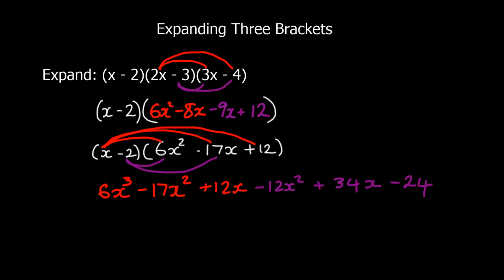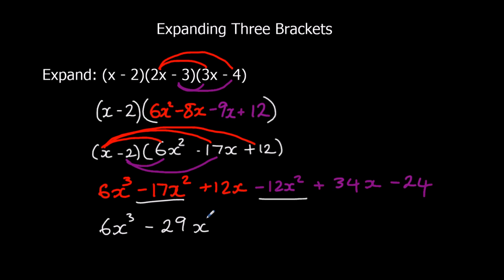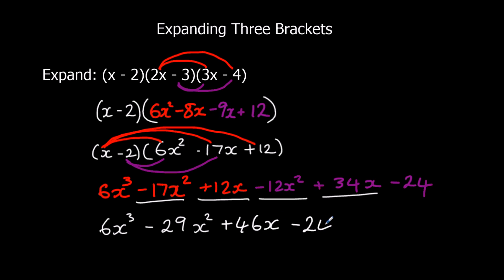Collecting the like terms: just one x cubed term, so 6x cubed. Two x squared terms: negative 17x squared take away another 12x squared goes down to minus 29x squared. Then 12x plus 34x is 46x. And negative 24 on the end.